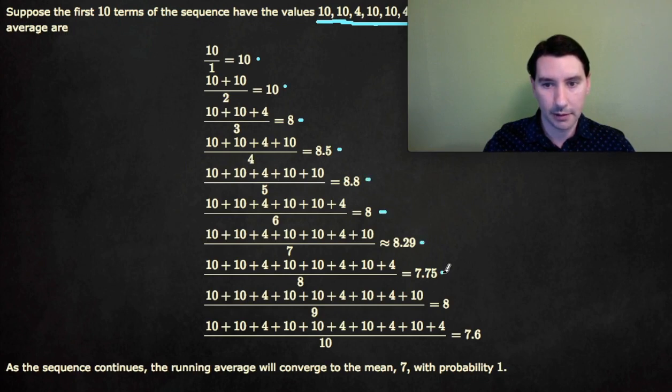And then as this goes on and on, the changes are going to get smaller and smaller. Because you add one more 4 or one more 10, it doesn't change the average by very much. So, that's why this will go to some fixed value, eventually it's going to converge to some number, because the changes are going to get smaller and smaller.